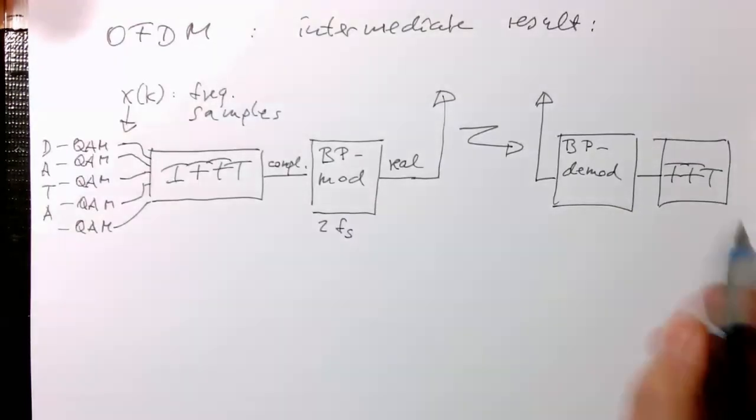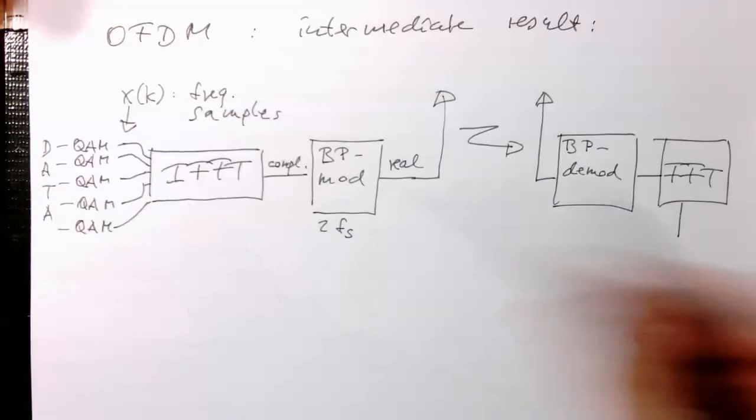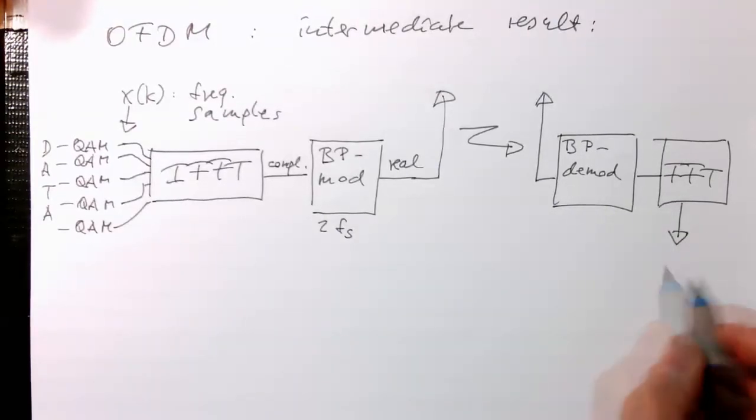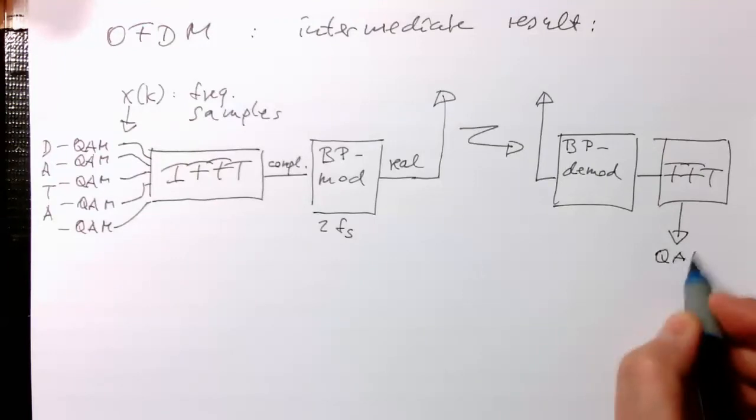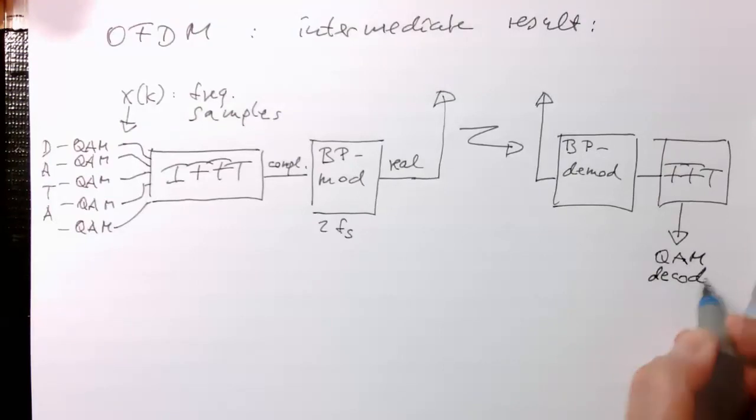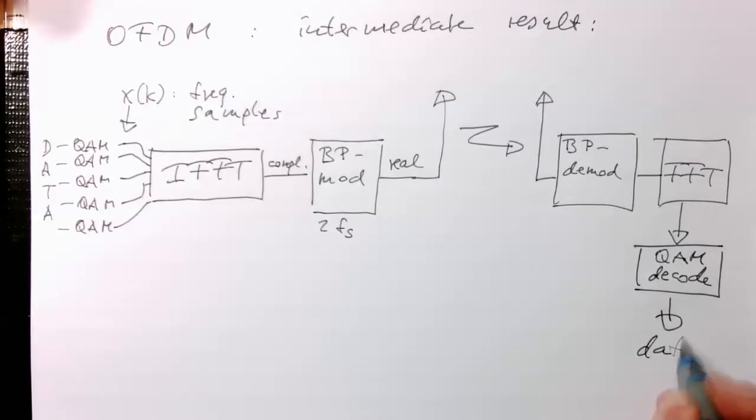And then this is just doing exactly the opposite here. And so then we just need to do a QAM decoding. So these are essentially thresholds as we know. And then with that we're getting out our data.